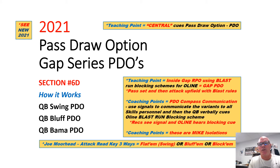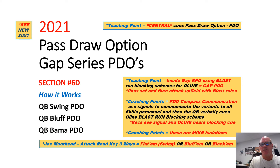Teaching point: we're going to use an inside gap RPO blast blocking scheme for our PDOs. The O-line will pass set and then attack upfield with blast blocking rules. For coaching points, we're going to use our compass communications, where we use signals to communicate the routes and the variances to the skills people, but the quarterback will verbally give the blast run blocking scheme call. These are mic isolations.